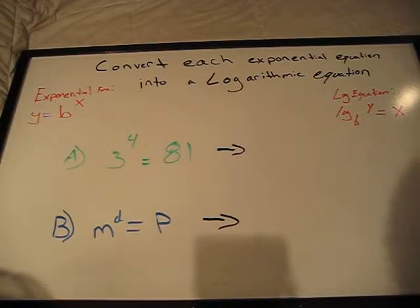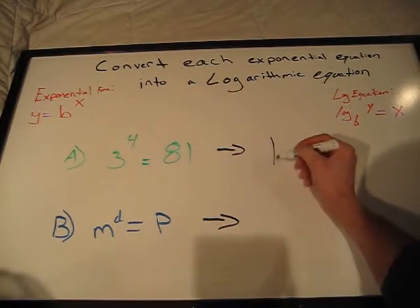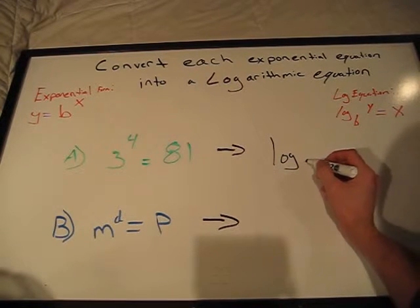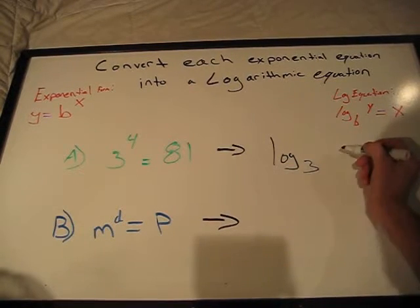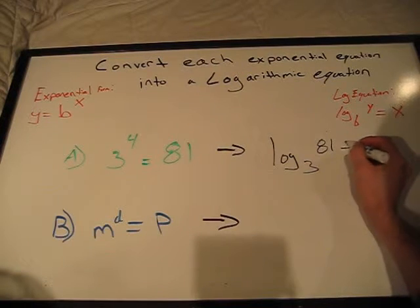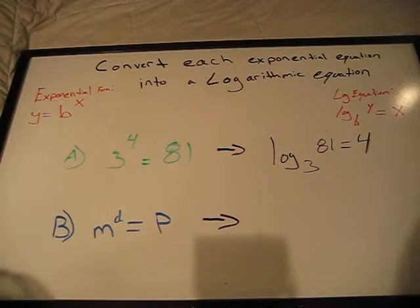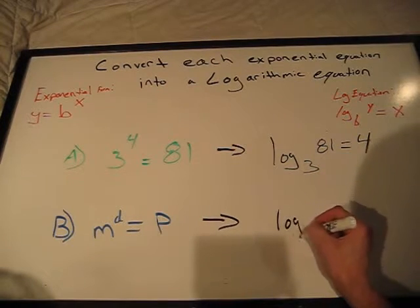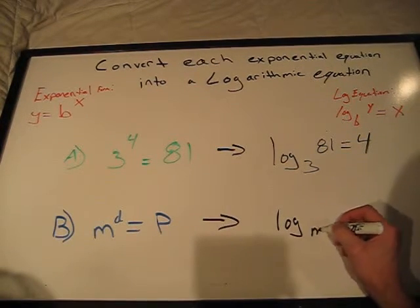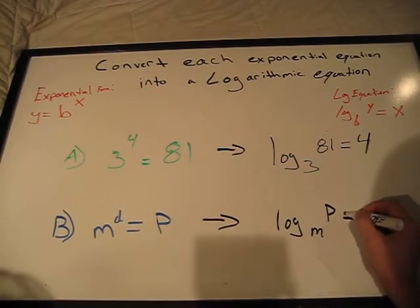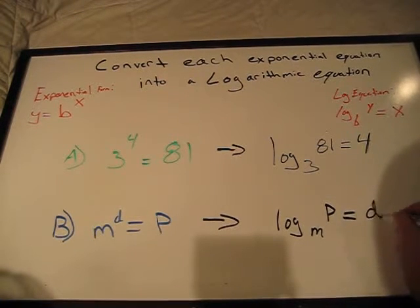For our first problem, we simply rewrite as log base 3 of 81 equals 4. For our second problem, we'll write log base m of p equals d.